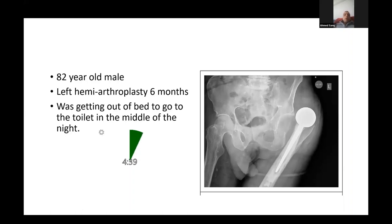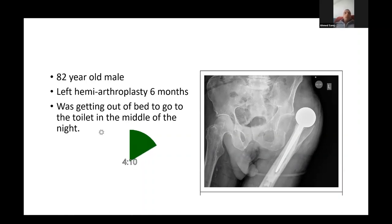I would go to the ED and before I start examining the patient I would need to know a little bit more information. I want to know the timing of the surgery and if I have any operative records, if the surgery has been done in the same hospital, what approach has been used, any previous history of dislocation, the cognitive ability of the patient, as well as his EMS score.